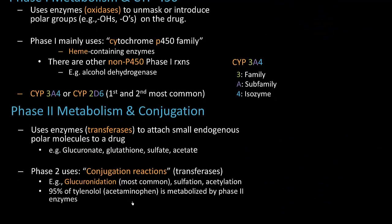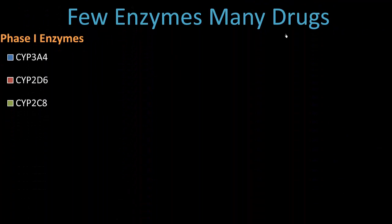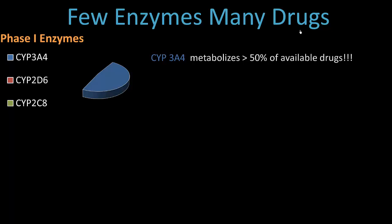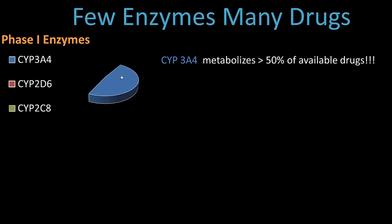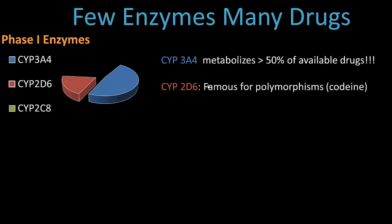Alright, so on the next slide, what we are going to do is just look at some of these enzymes and I want you to just have an appreciation here. You don't have to really memorize too much. The first idea here is that the CYP3A4 enzyme, if this was a graph, a pie chart of the amount of drugs available now that are metabolizable, CYP3A4 metabolizes over 50% of available drugs.